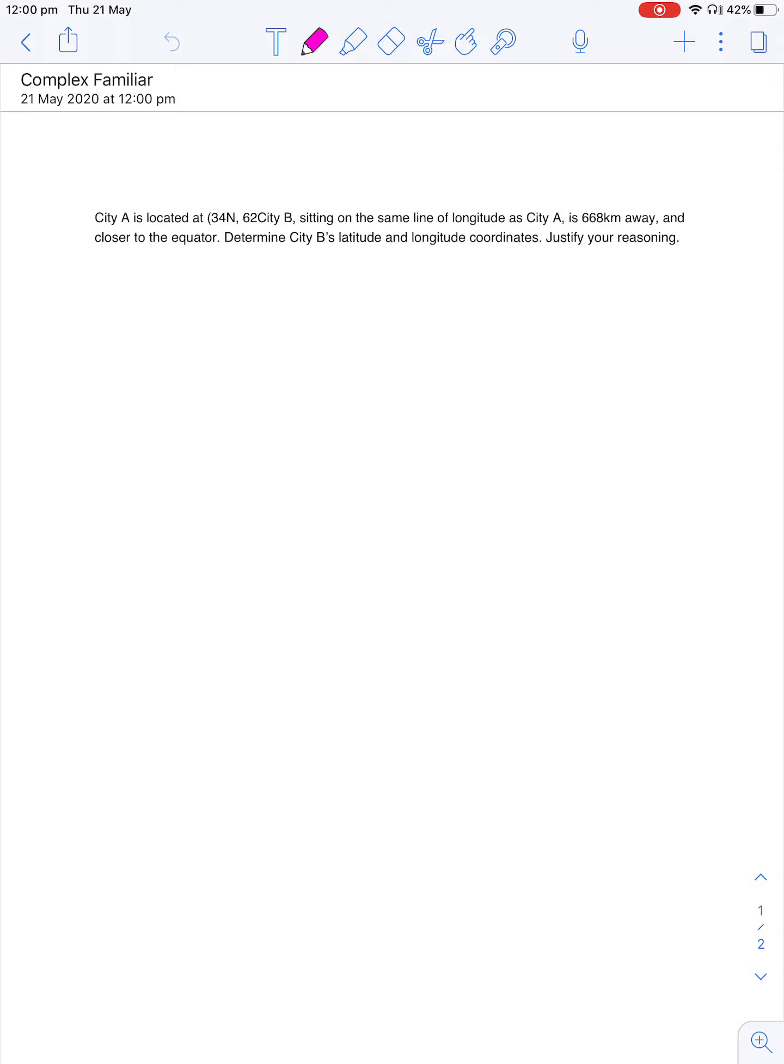So City A is located at 34 degrees north. There should be a degree sign there. And then 62 degrees west. I don't know why that's missing, but that's okay.